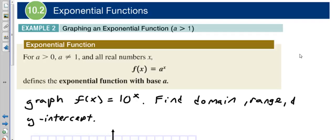Alright, so in example number two we're going to graph an exponential function when a is greater than one. By definition, when a is greater than zero—so that's our base—a has to be bigger than zero but not one, and then that means we're going to define this as an exponential function with a base of a.